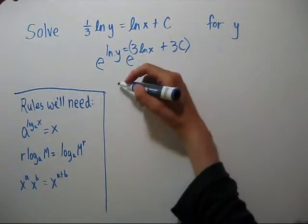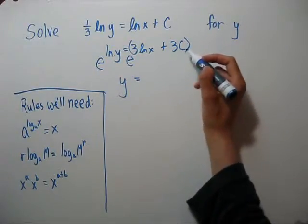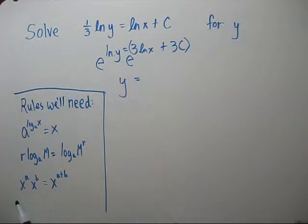So e to the ln of y gives us y. For the right side, we're going to use this rule: if we have a sum in our exponent, we can change that to multiplication.